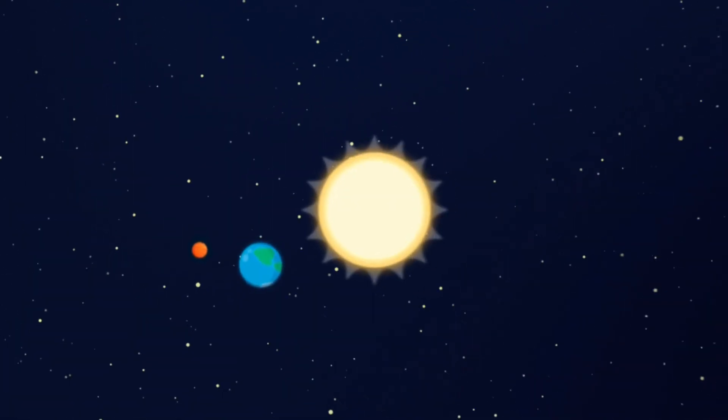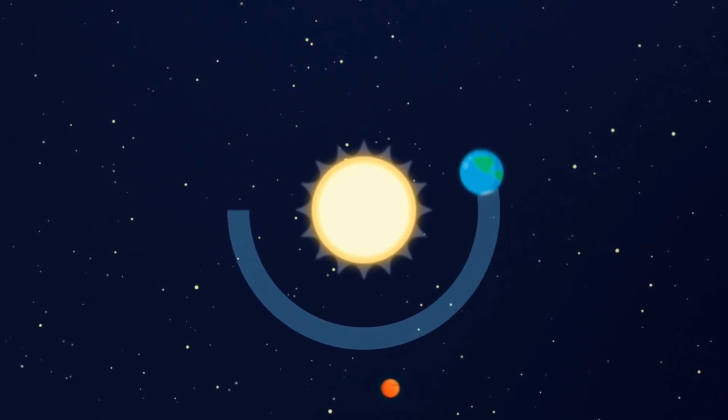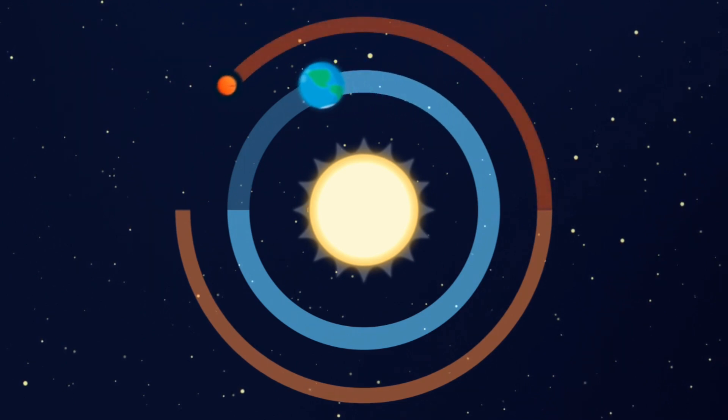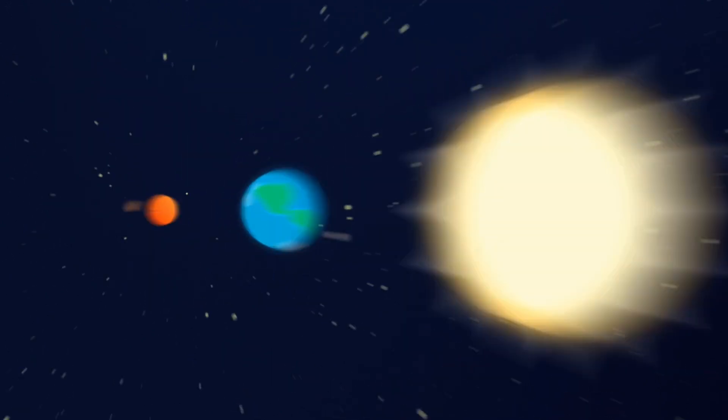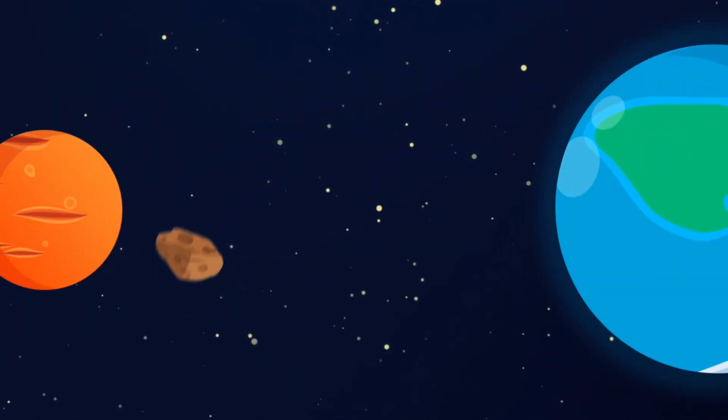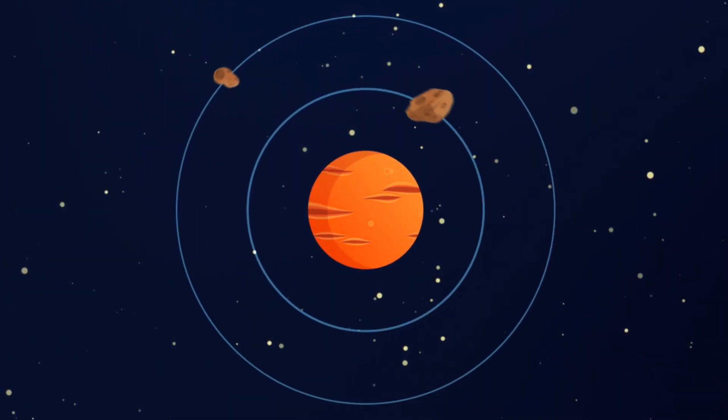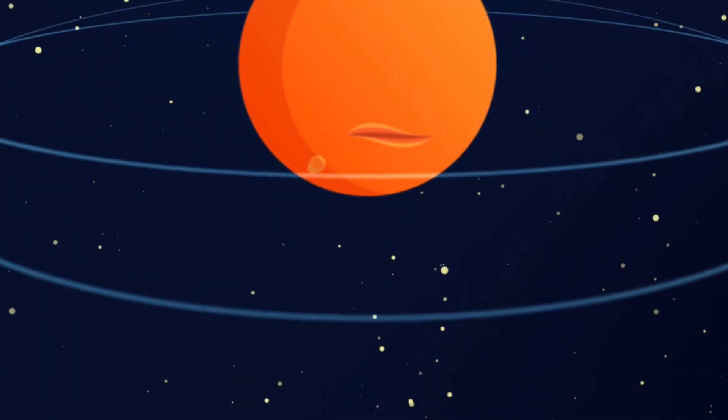Let's meet our closest neighbor, Mars. A Martian year is almost twice as long as on the Earth. That means that it takes Mars twice the time it takes the Earth to go around the Sun. Just like the Earth, Mars has a satellite. Actually, two of them. Two huge, gigantic stones.